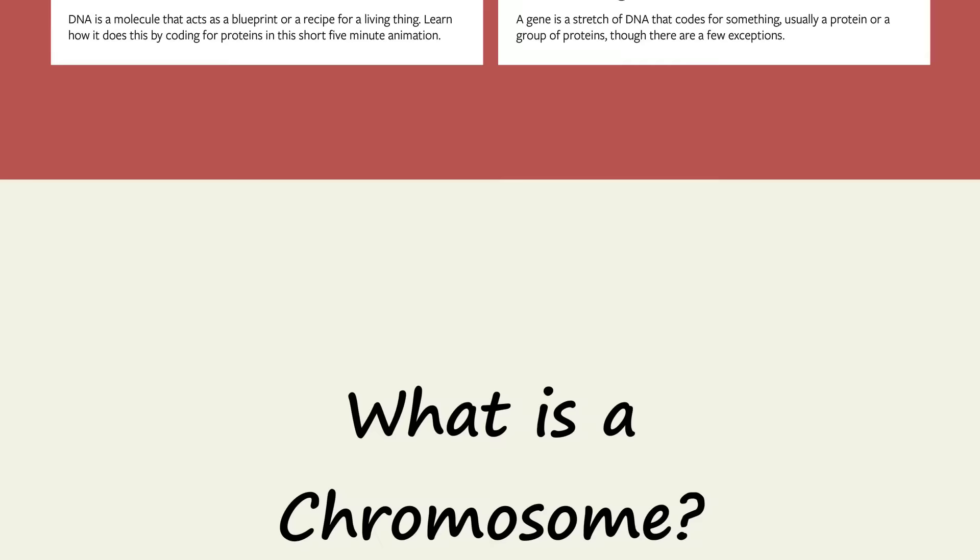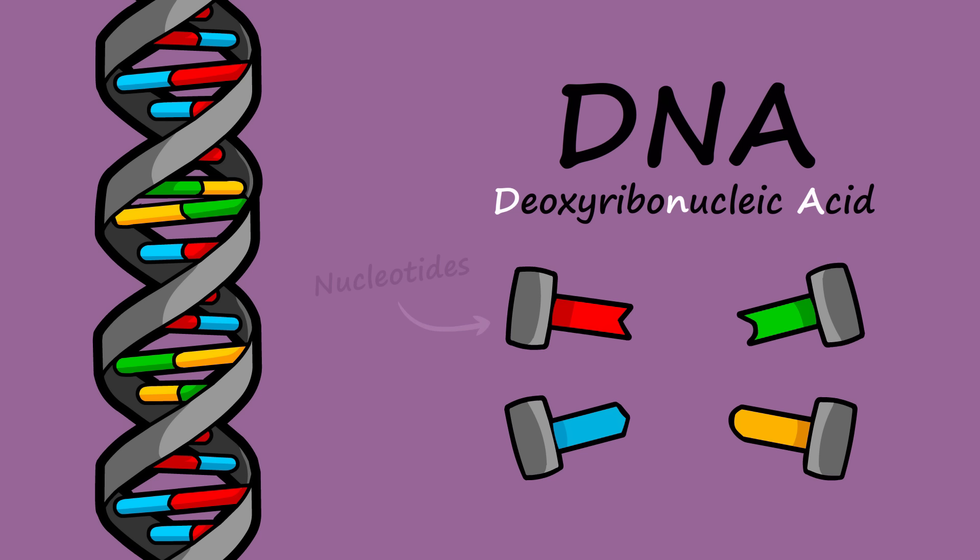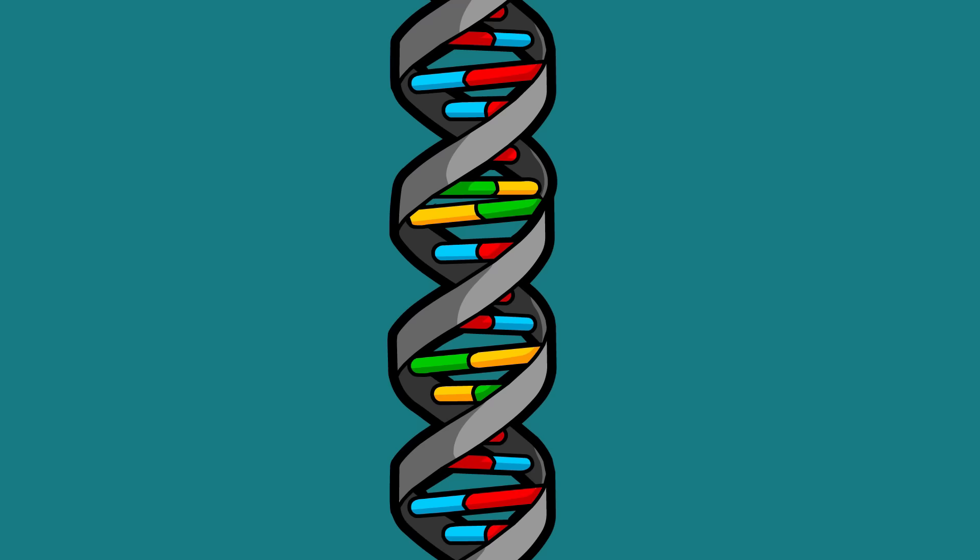Stated Clearly presents: What is a chromosome? In previous animations, we learned that DNA is a spiraling chain-like molecule made up of four different types of nucleotides. Scientists have labeled them A, C, T, and G.